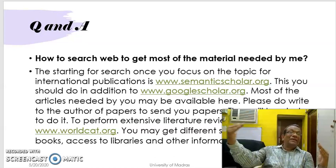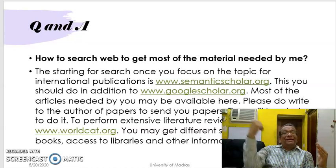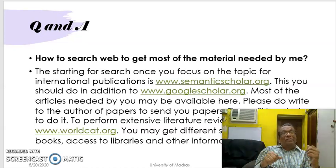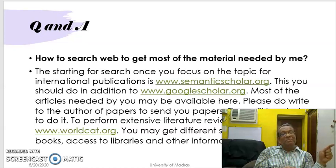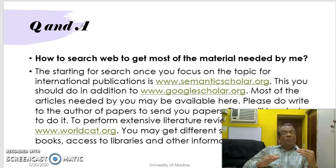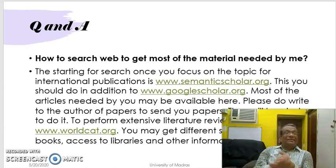For example, you can know what is the first article published on your topic. Semantic Scholar will give you the first article published — say 1951 — and then it will show you every year how many articles are being published, by way of a graph. You can click on each one of them.